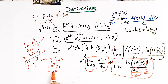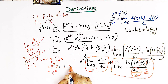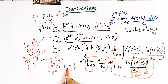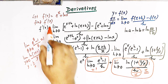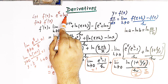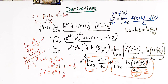So we can write e raised to x times 1 plus 1 times 1 over x, because the value of this limit is 1 and here we have 1 over x. So we get e raised to x plus 1 over x. The derivative of this function using the first principle is given by e raised to x plus 1 over x.